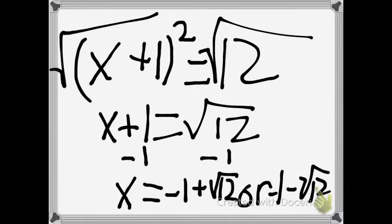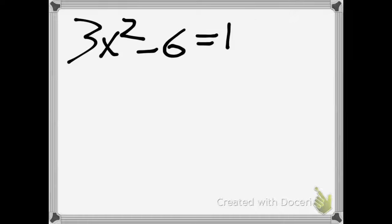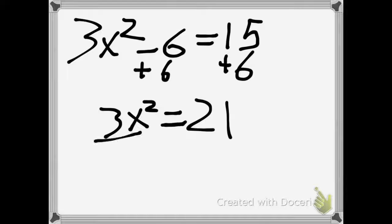Next we have a different sort of equation that you can solve with the square root method. We have 3x squared minus 6 equals 15. This can't be factored, so we use a different method. We try and isolate x by adding 6 on both sides, and then dividing both sides by 3, giving us x squared equals 7.